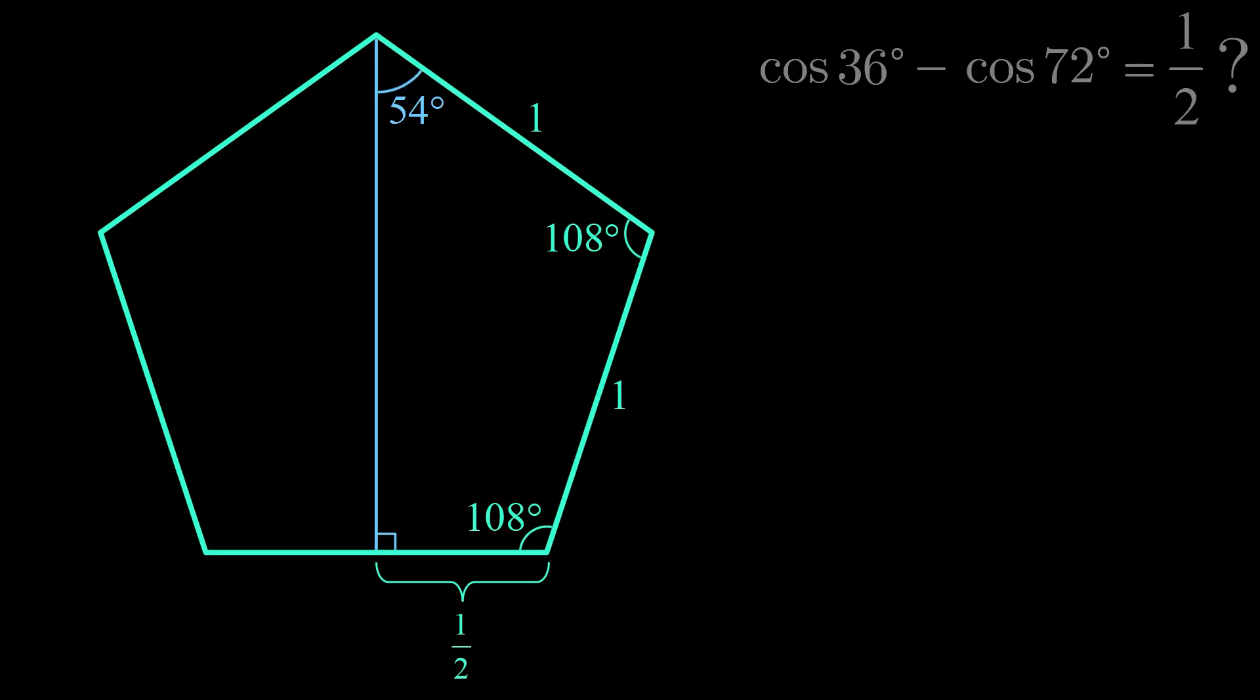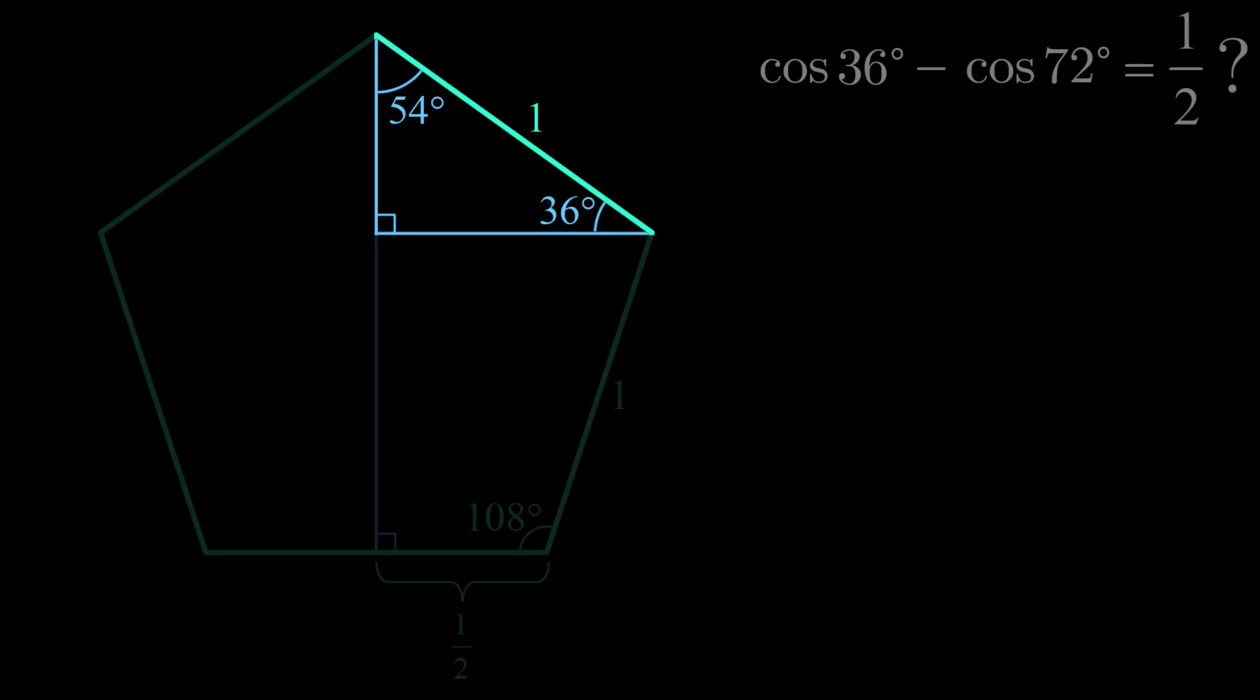If we then drop a perpendicular from an adjacent vertex to this angle bisector, we get a right triangle containing acute angles of 54 degrees and 36 degrees. The cosine of the 36 degree angle is equal to its adjacent side length divided by the hypotenuse length. Substituting 1 for the hypotenuse length and simplifying the right side of our equation, tells us that our adjacent length is cos 36 degrees.